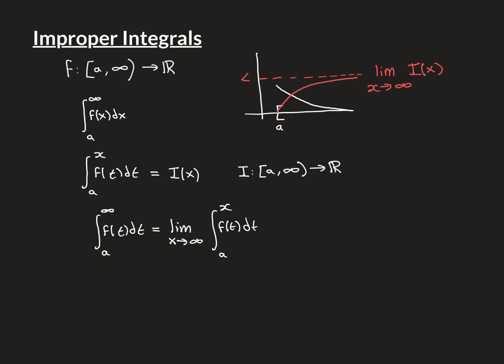So that is the definition for the first type of improper integral: the integral from a to infinity of f(t) dt equals the limit as x approaches infinity of the integral from a to x of f(t) dt, provided this limit is actually finite. If i(x) gets unbounded in either direction the limit won't be finite and the improper integral doesn't exist. It's called an improper integral to distinguish it from the normal integral where both bounds are finite real numbers.